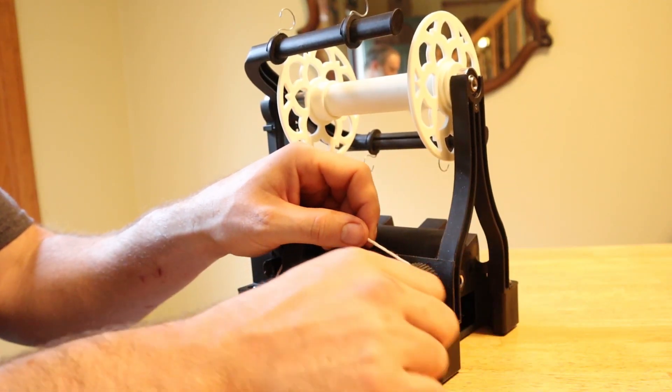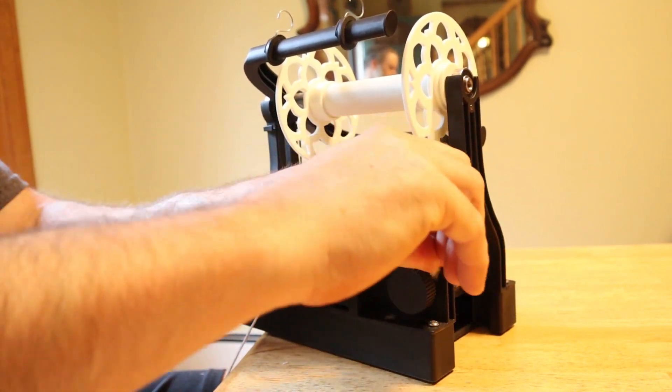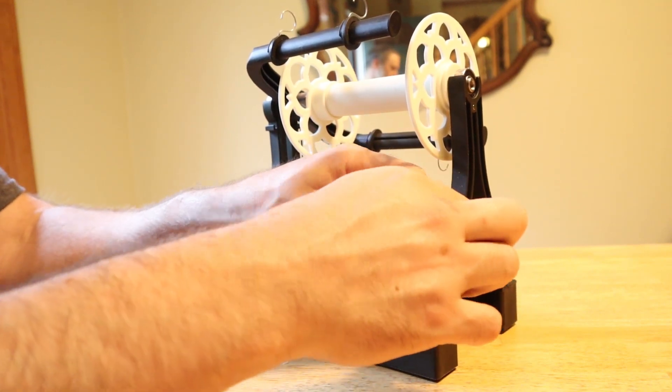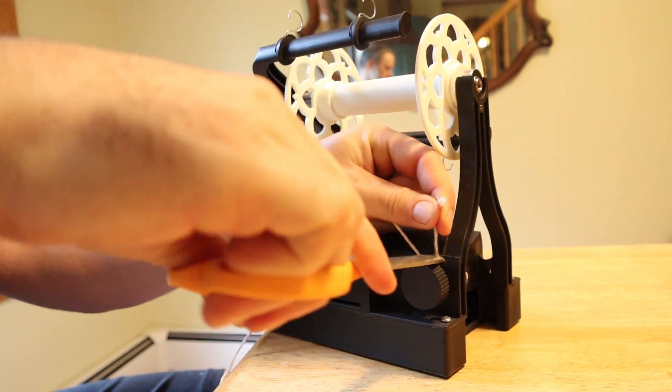Then to tie the new string on I just generally wrap around the dial a couple of times and then tie pretty much any simple knot here. I'll cut the tail off with scissors.